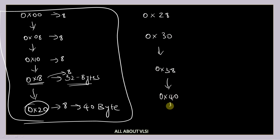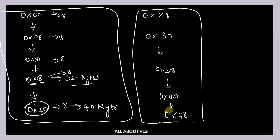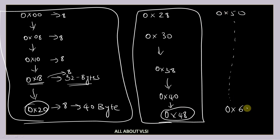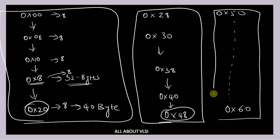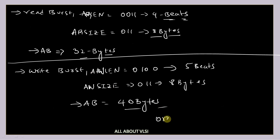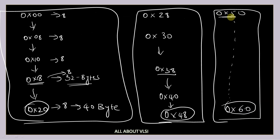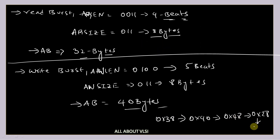Continuing, from 0x50 to 0x60 is another address range with 0x60 as the 40-byte boundary. If the starting address is 0x38, the next address is 0x40, then 0x48 — upon reaching the boundary, do not go to 0x50. Instead, wrap back to 0x28 (the start of that address range). The 4th address is 0x28 and the 5th is 0x30. This is how addresses are calculated in wrapping burst.